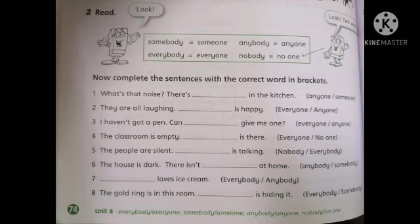Now let's see question number two. Remember: somebody equals someone, anybody equals anyone, everybody equals everyone, nobody equals no one — each pair is interchangeable. Now complete the sentences with the correct word in brackets. Number one: what's that noise? There is someone in the kitchen — we use someone because it is an affirmative sentence. Number two: they are all laughing — everyone is happy, we use everyone in the affirmative.